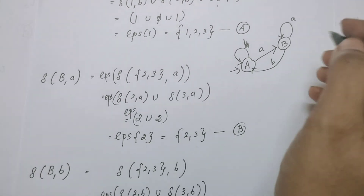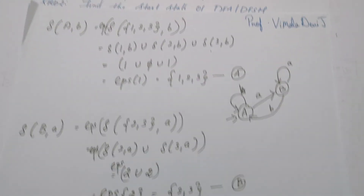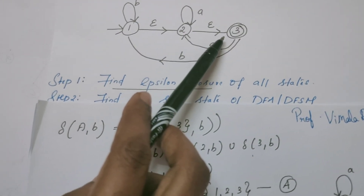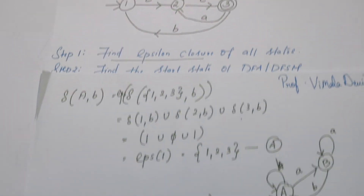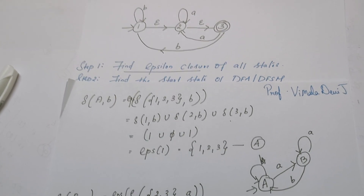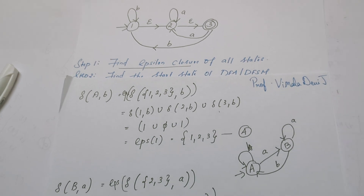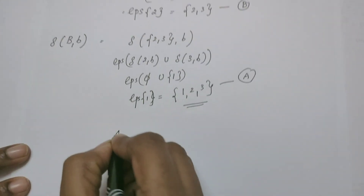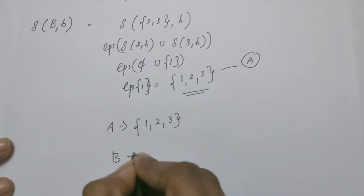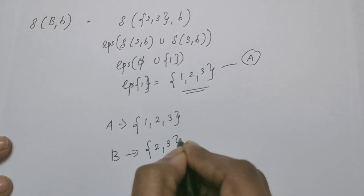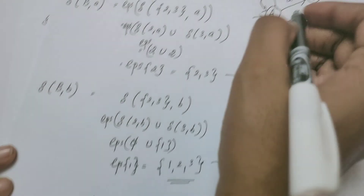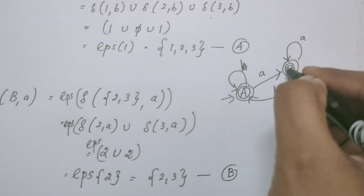The last step — Step 4 — is to identify the final states. The final state of the NFA is state 3. In the DFA, whichever states contain state 3 as a member are identified as final states. A is {1, 2, 3} and B is {2, 3} — in both cases, 3 is a member. Therefore, both A and B are final states.